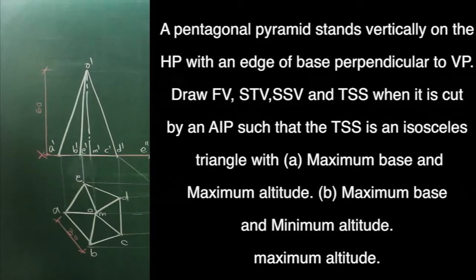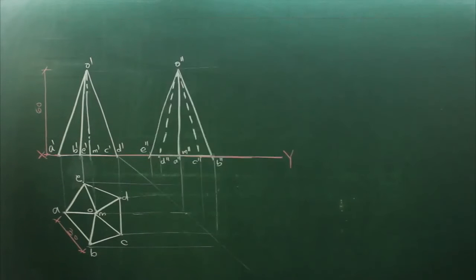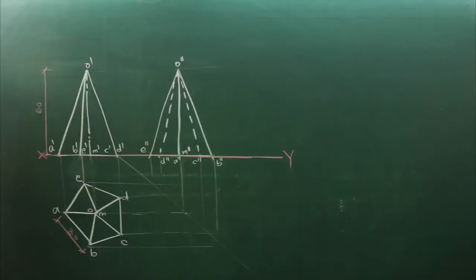A pentagonal pyramid stands on its base on the HP with the edge of base perpendicular to BP. Draw a front view, sectional top view, sectional side view, and TSS when it is cut by an AIP such that the TSS is an isosceles triangle with maximum base and maximum altitude. We are taking Case A: maximum base and maximum altitude.